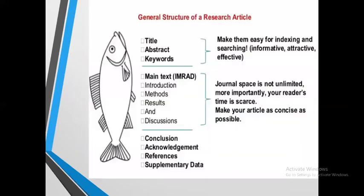Now, the general structure of a research article. While writing a research paper, you will have to consider these things. The structure is broadly classified into three parts: the head part, the body or middle part, and the tail part. In each article, the head part contains the title of the paper, the abstract, and the keywords from the abstract.